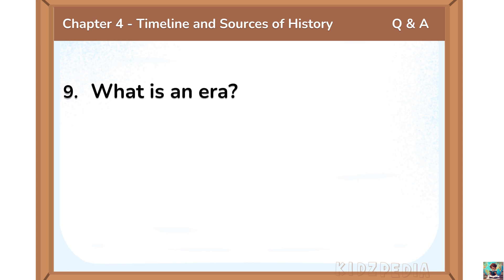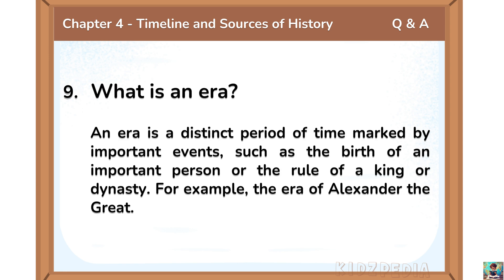What is an era? An era is a distinct period of time marked by important events, such as the birth of an important person or the rule of a king or dynasty. For example, the era of Alexander the Great.